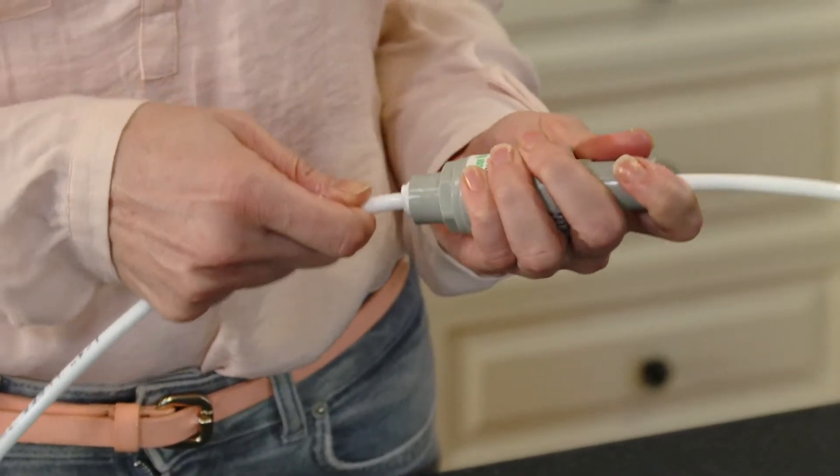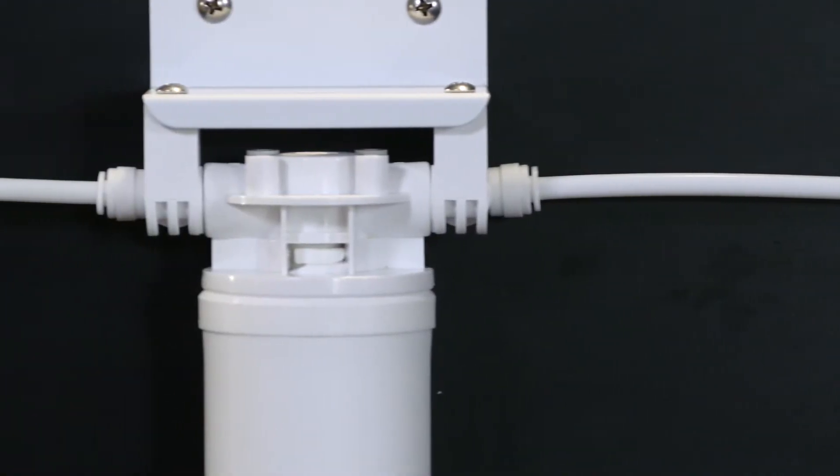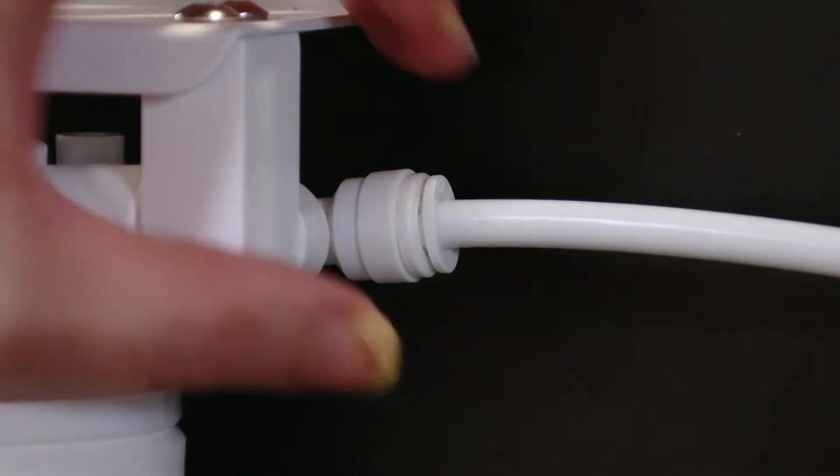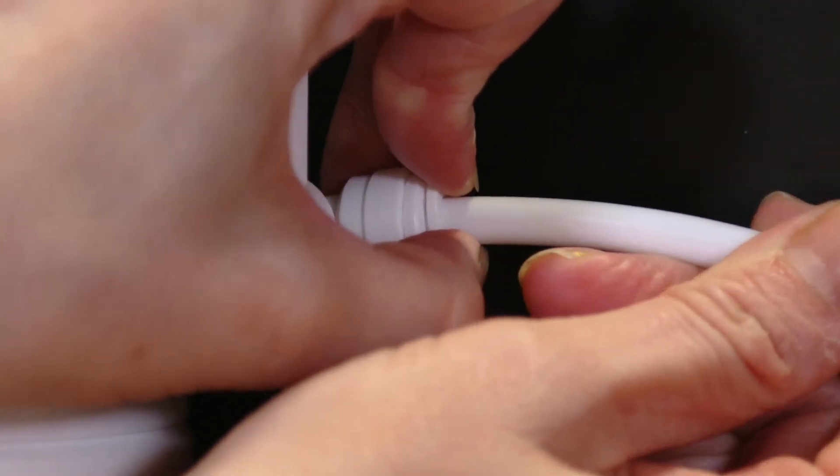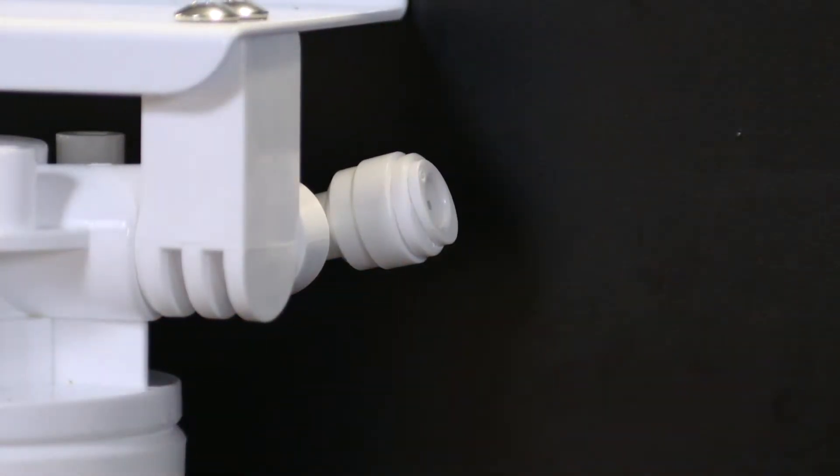To release the tubing for maintenance or repairs, simply locate this release ring, push and hold inwards until flush. Firmly grab the tubing and pull out.